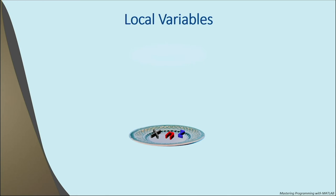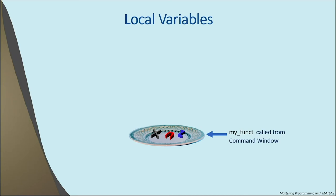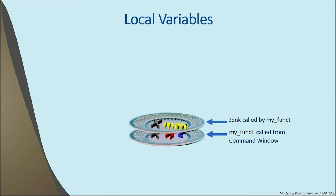When a function is called, a new area at the top of the stack is allocated for it to store all its local variables. This area is called a stack frame, or just a frame. Here we're showing the stack frame of a function named MYFUNCT called from the command window. The function's commands — assignment statements, if statements, for loops, etc. — are stored in the rest of memory. But all its variables, x, n, and z, are stored in its stack frame, shown as a dish.